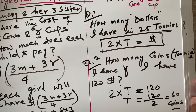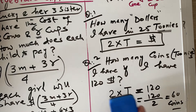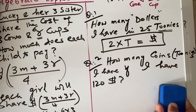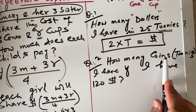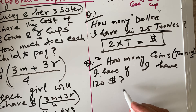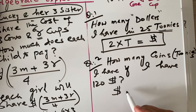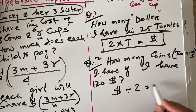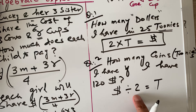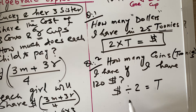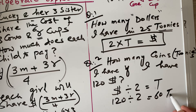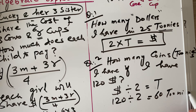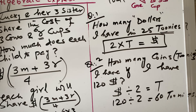Alternatively, you can write a new expression directly: dollars divided by 2 equals toonies. Since a toonie is two dollars, whatever dollars you have, divide by 2 to get the number of toonies. So 120 dollars divided by 2 equals 60 toonies. Either approach is correct.